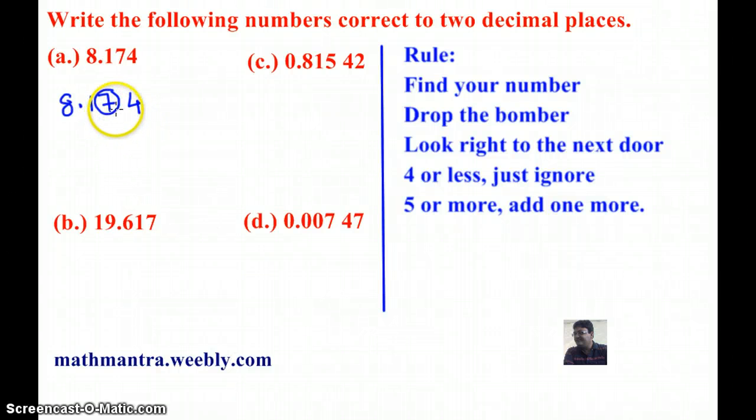And then, let's look at the next door number which is 4. Now, according to the rule, if the next door number is 4 or less, we have to ignore.